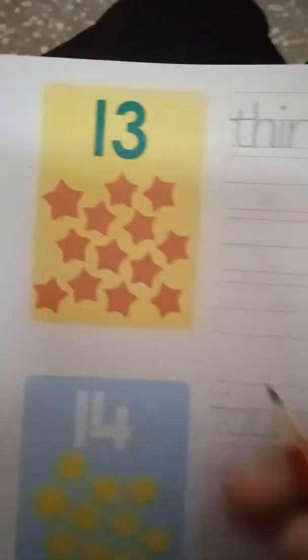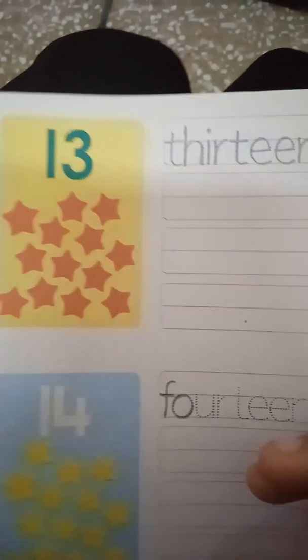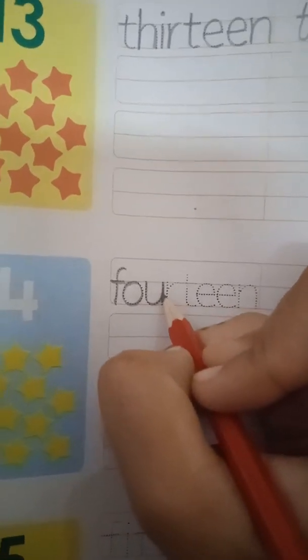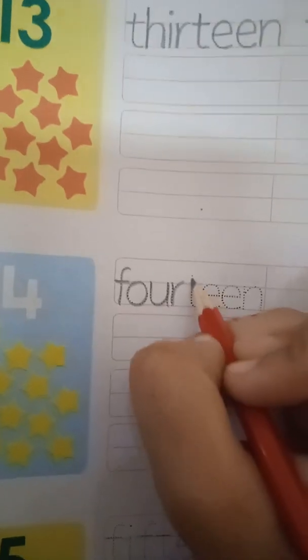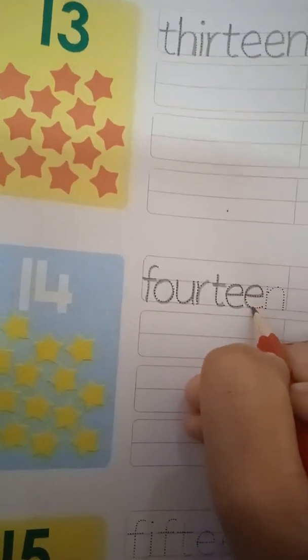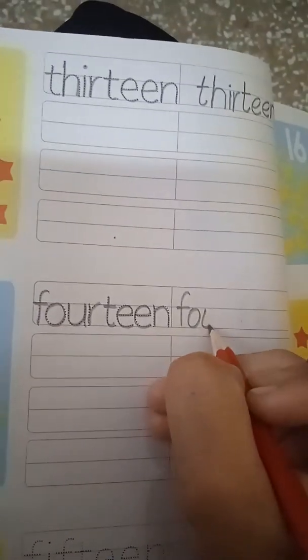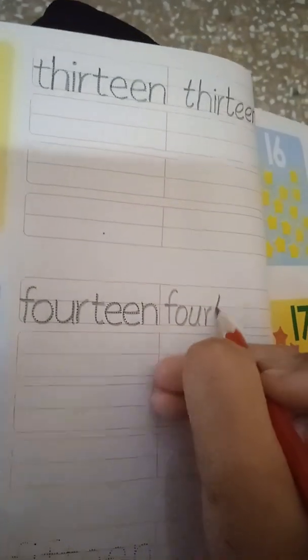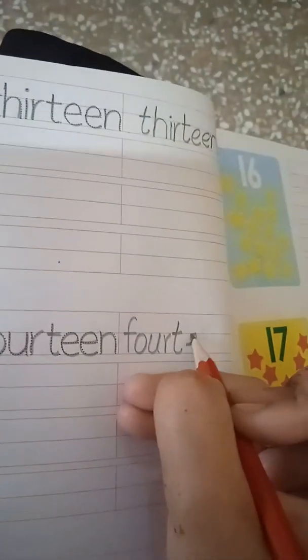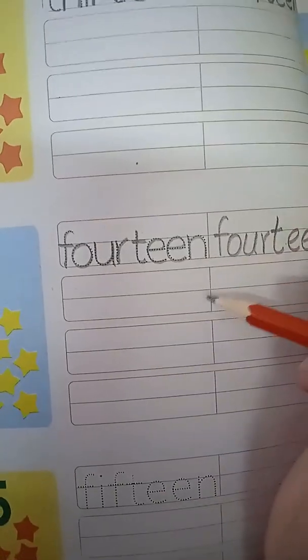Now come to number 14. F, O, U, R, T, double E, N. 14. 14. F, O, U, R, T, double E, N. So these lines you have to write by yourself there.